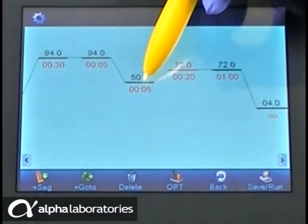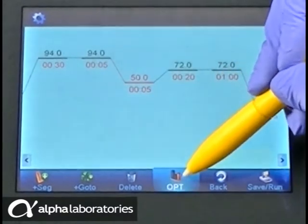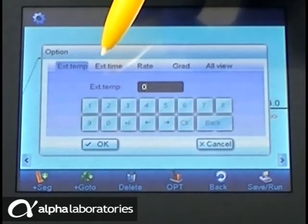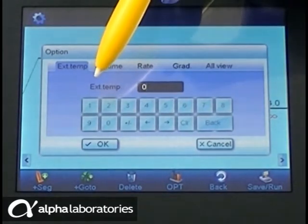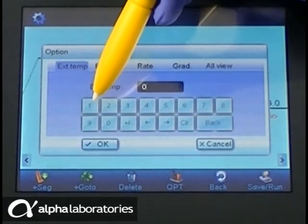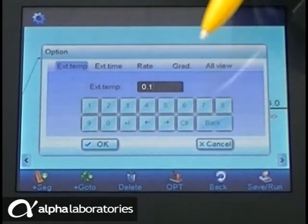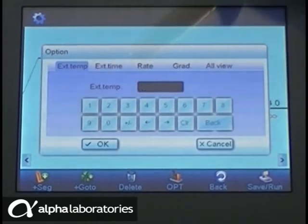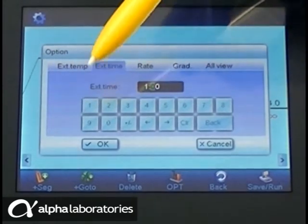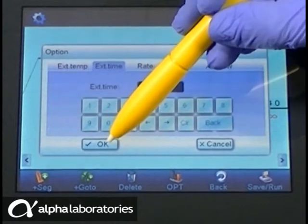For any step, there are additional options available within the OPT menu for simple setup of complex protocols. For touchdown PCR, the extended temperature function easily controls increased or decreased temperature at each cycle. Similarly, the extended time function lets you vary the time at each cycle, making it suitable for long PCR.